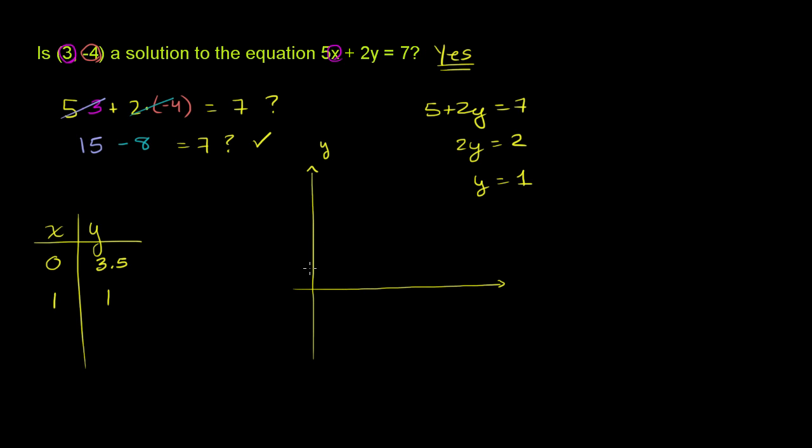So let's say that this is y is 1, 2, 3, 4. This is negative 1, negative 2, negative 3, negative 4. I could keep going down in that direction. This is 1, 2, 3, 4. And I could just keep going on and on in the positive x direction.